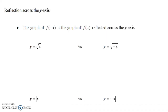We also have reflections across the y-axis. Here we're not flipping upside down across the x-axis — we're flipping left and right across the y-axis. The graph of f(−x) is the same thing as the graph of f(x), only reflected across the y-axis. f(−x) is the same as f(x), only you've replaced all the x's with negative x — not putting a big negative in front of the function, but replacing each x with negative x. That has the effect of reflecting across the y-axis.